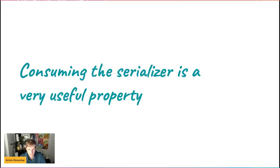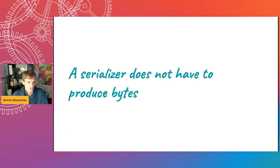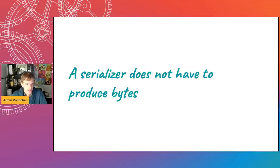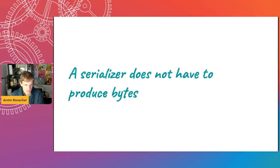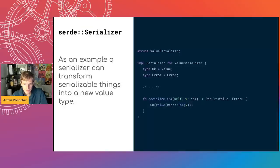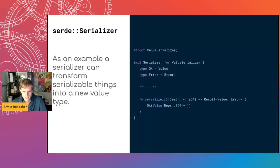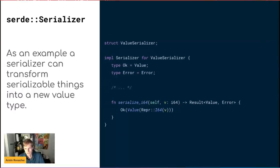Consuming the Serializer is a really useful property because you don't have to produce bytes. A lot of Serializers will produce bytes — everything that's a wire format like YAML, JSON, or bincode will typically take a writer as input to the Serializer, and every Serializer method will just write into the writer. But you can also do more interesting things. For instance, straight out of Insta — also used in MiniJinja — there's a value Serializer.